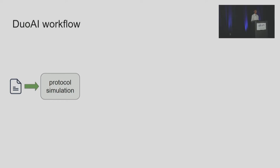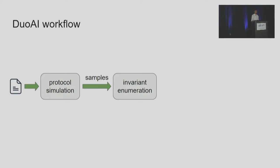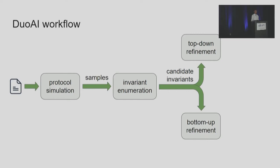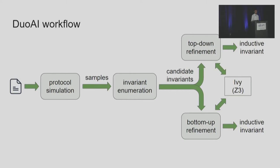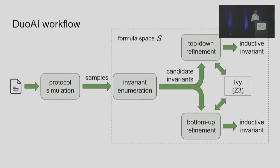Here we introduce the workflow of Dual AI. Given the distributed protocol, we first simulate it randomly and repeatedly, giving us a collection of samples. Then we enumerate possible formulas and check their validity on the samples, giving us a set of candidate invariants. Then Dual AI uses two procedures: top-down refinement and bottom-up refinement. Both procedures interact with Ivy, which builds on top of the Z3 SMT solver, and try to refine the candidate invariants until they become inductive. The enumeration and refinement procedures are parameterized by a formula search space; if we cannot find an inductive invariant within a small search space, we enlarge it and try again.